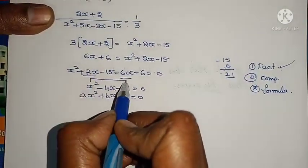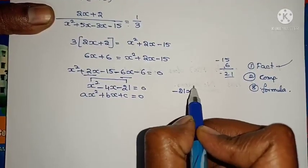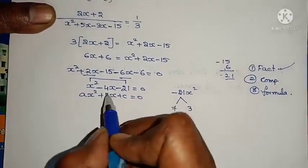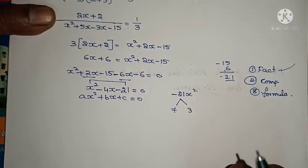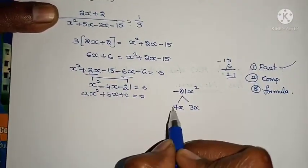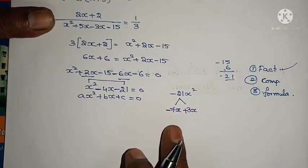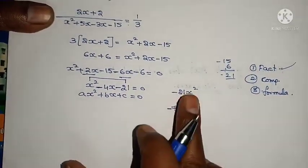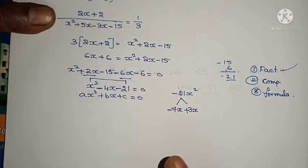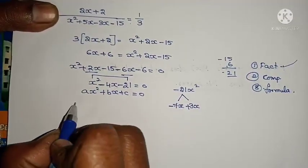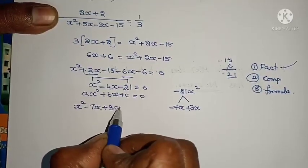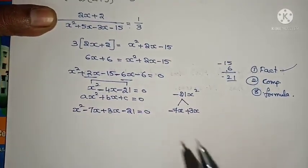Multiply the first term and last term: minus 21X squared. For this write the factors: 7 times 3 is 21, and 7 minus 3 gives us 4. So take 7 and 3. The symbol is minus, so bigger number gets minus, smaller number gets plus. Check: minus 7 times plus 3 gives minus 21, and minus 7 plus 3 gives minus 4. Correct.